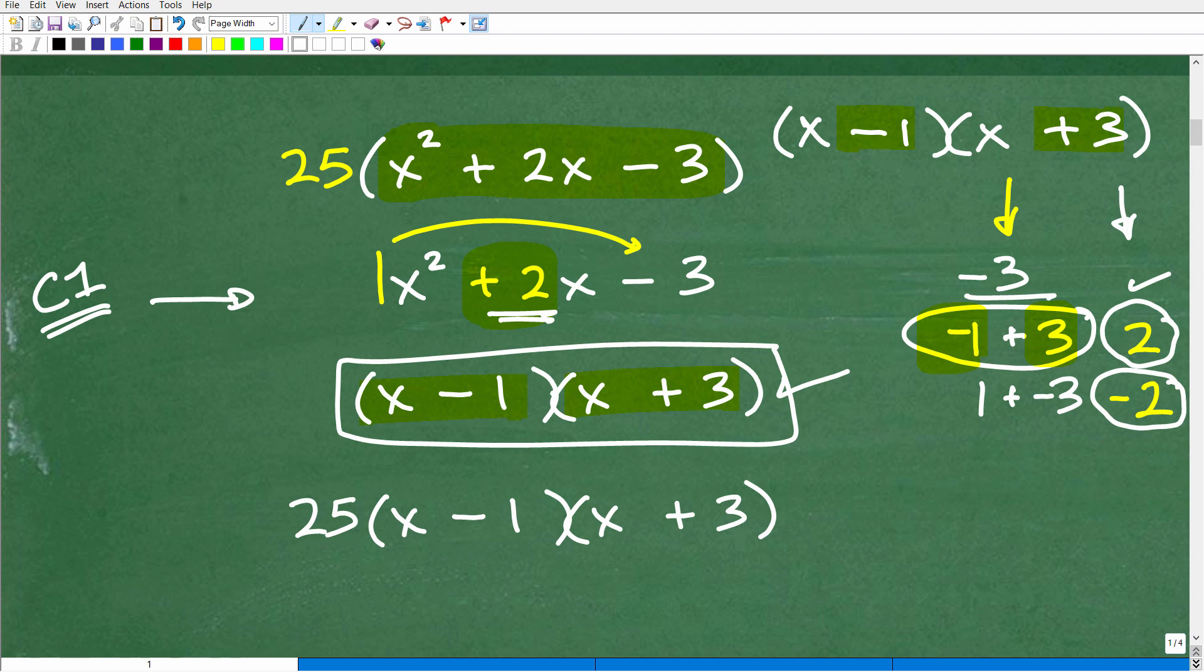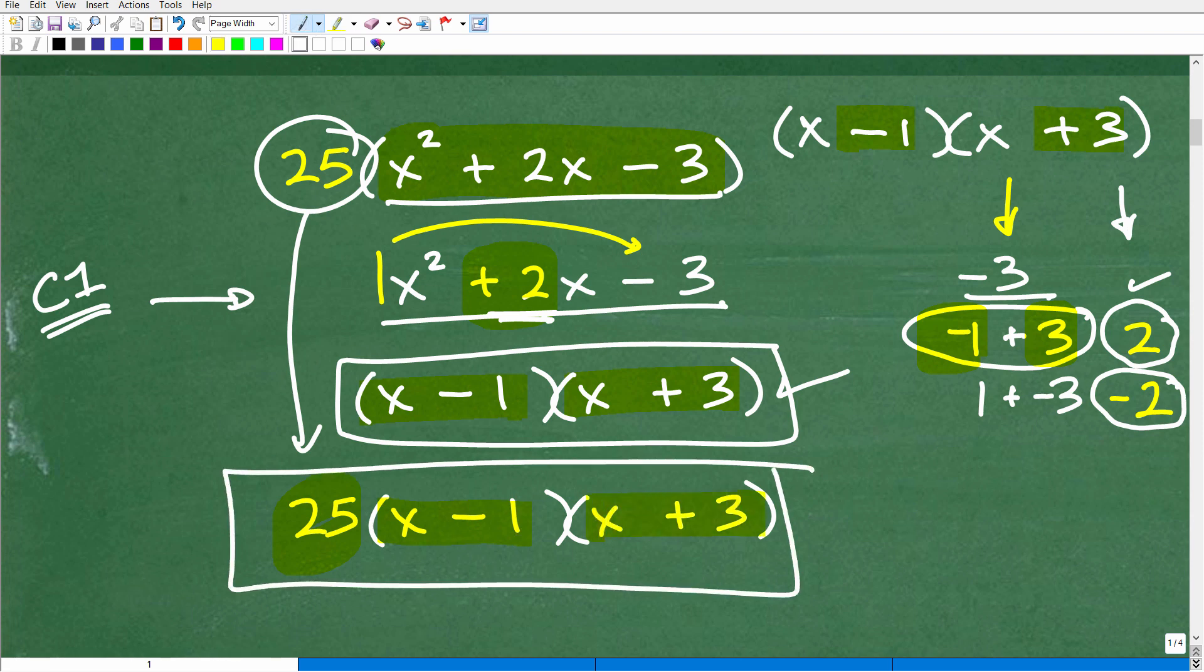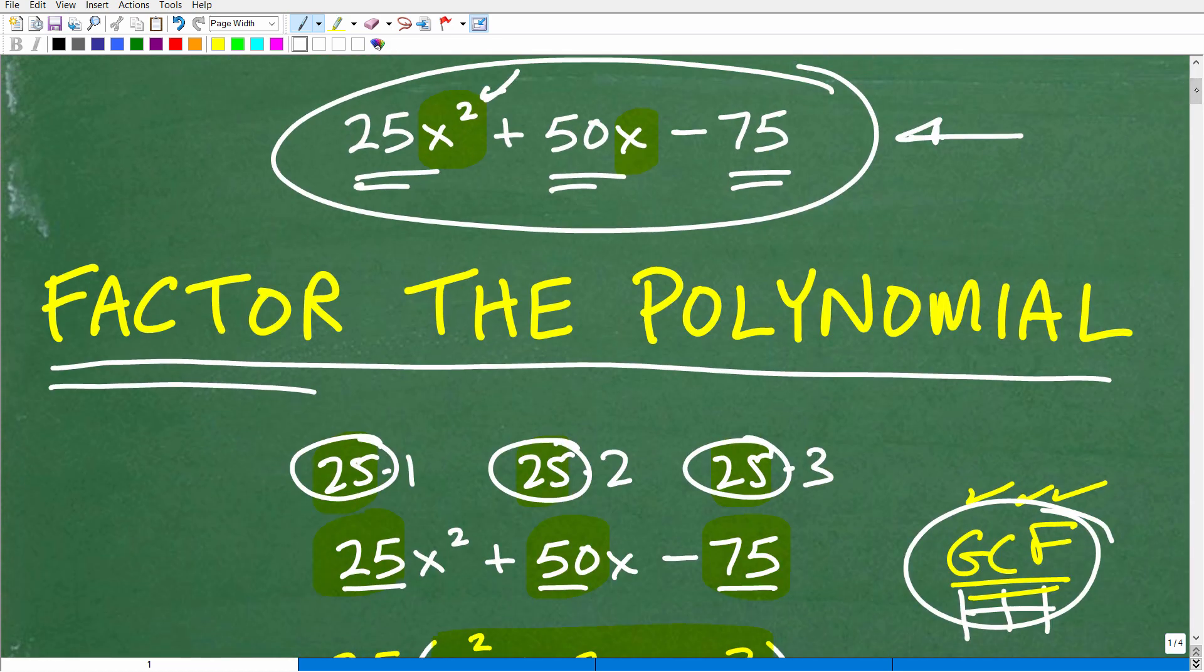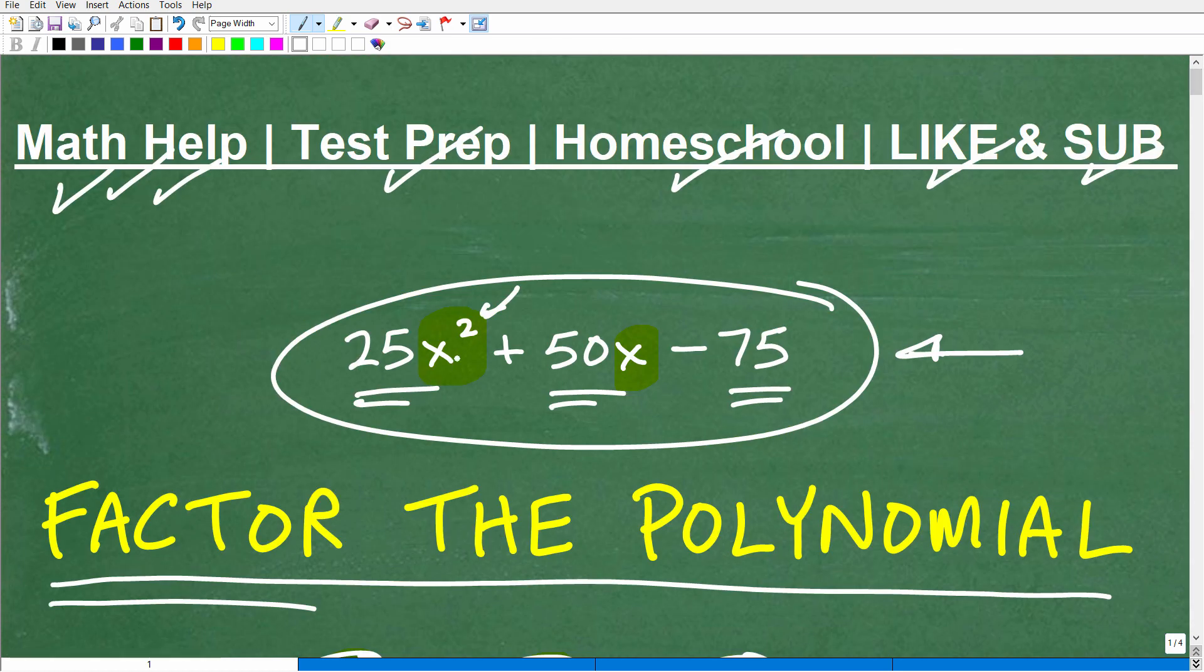So here we have x minus 1 times x plus 3. These are the factors of this trinomial. But remember, we have our GCF 25 there, so we can't forget about that. So our final answer is going to be 25 times x minus 1 times x plus 3. This is the factor to our original problem right up here, which is 25x squared plus 50x minus 75.